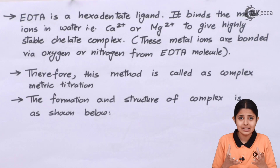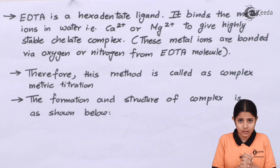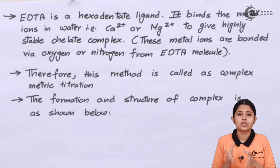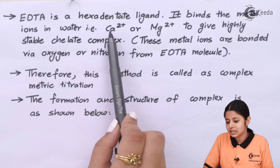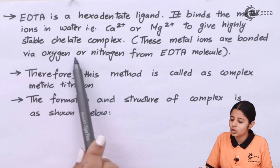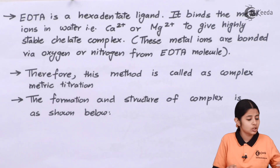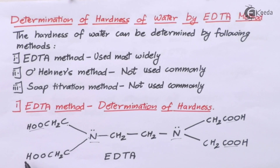Hexadentate means it will have six — hexa means six — dents or six ways in which it can take away electrons or negative ions from a metal or any other electron-rich substance. So EDTA is a hexadentate ligand. It binds the metal ion in water, for example Ca2+ or Mg2+, to give a highly stable chelate complex. These metal ions are bonded via oxygen or nitrogen from the EDTA molecule. In the structure, nitrogen appears on two sides and oxygen on four sides, making it hexadentate.